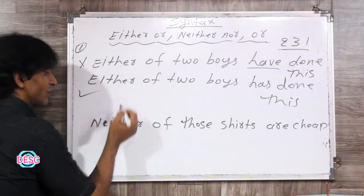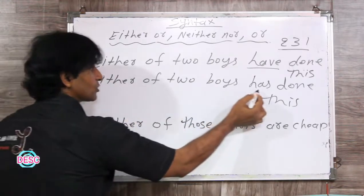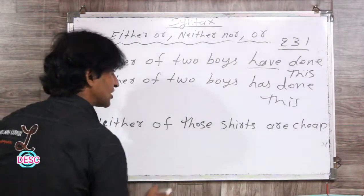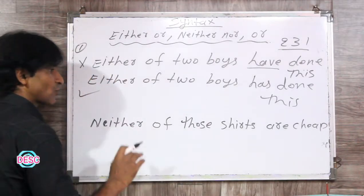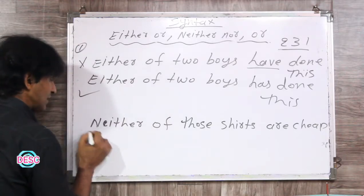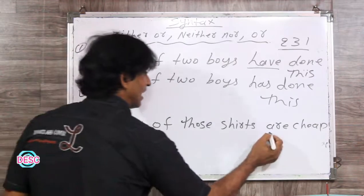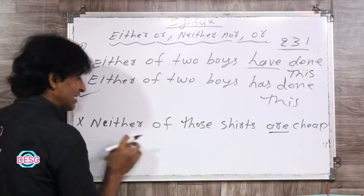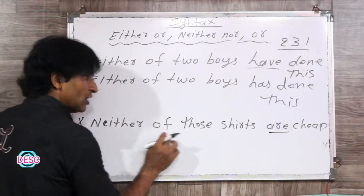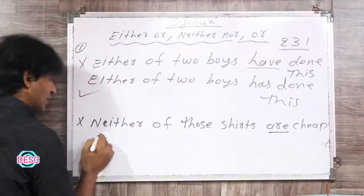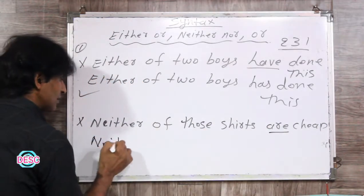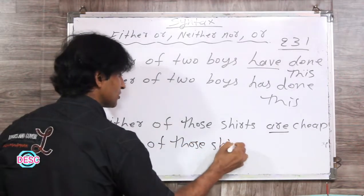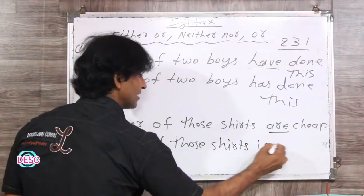हमेशा याद रखना कि either और neither का इस्तमाल हो, तो उसमें हमेशा singular verb का इस्तमाल होता है. अब दूसरा sentence: 'Neither of those shots are cheap' — उनमें से कोई भी शाट सस्ती नहीं है — यहाँ पर 'are' का इस्तमाल किया है, इसलिए this is incorrect. नियम के अनुसार either/neither के साथ singular verb का ही इस्तमाल करते हैं — तो सही होगा 'is'.